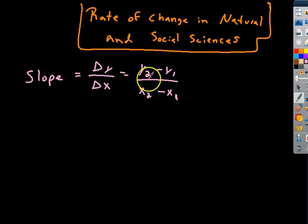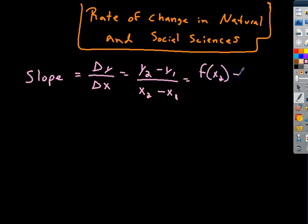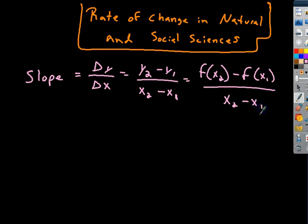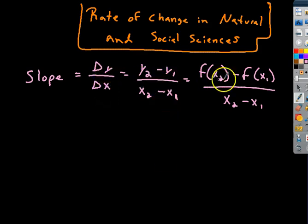So if we had an equation, y sub 2 is essentially f of x sub 2, and y sub 1 is essentially f of x sub 1. x sub 2 and x sub 1 are still the numbers we're looking at. The slope is change in y over change in x — change in y can be expressed using function notation — and all that represents slope.